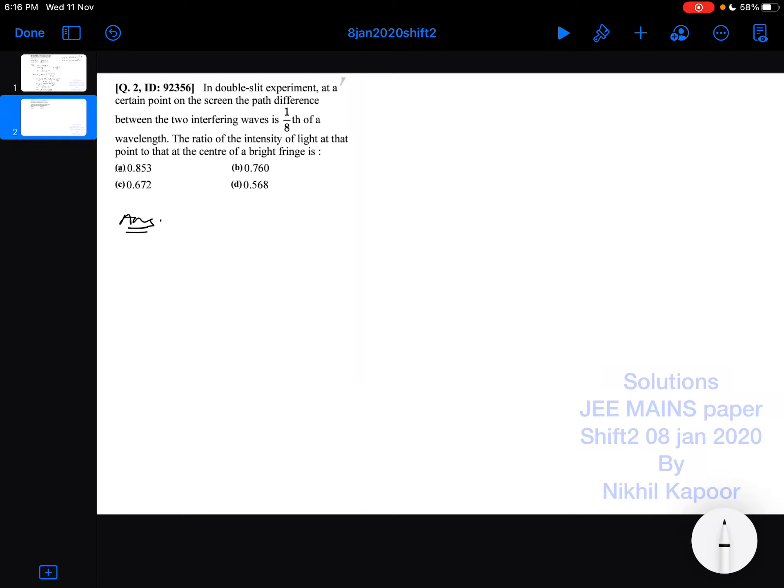So let's start with the second example. In double slit experiment at certain point on the screen, the path difference between interfering waves is 1 upon 8 times of lambda.